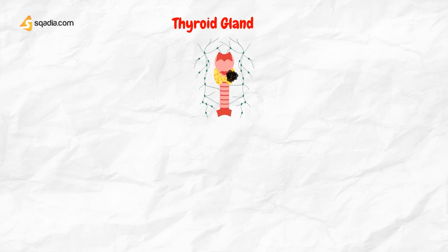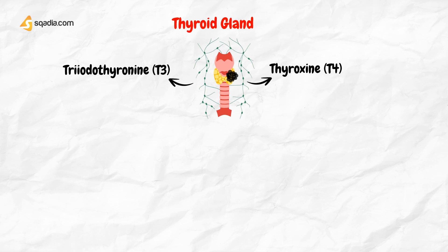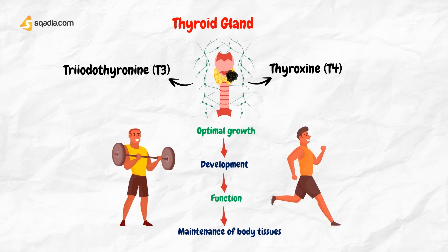The thyroid gland secretes two iodinated hormones called triiodothyronine (T3) and thyroxine, also called levothyroxine or tetraiodothyronine (T4), which are responsible for the optimal growth, development, function, and maintenance of body tissues.